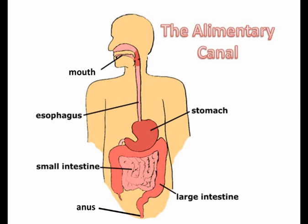Let's begin with a look at the alimentary canal. You can think of this as one single tube going from your mouth to your anus that your food passes through. Anything that stays inside this tube is going to leave through the anus so no nutrition will be absorbed. The job of the digestive system is to absorb as much nutrition as possible from your food, and for this to happen it needs to break the food up into small enough pieces to fit through the wall of the alimentary canal.